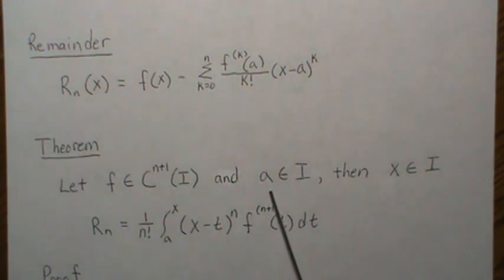We're going to let some point A be in our interval. And this applies to the interval, some interval. We're going to let A be in that interval, and X be in that interval. And then the remainder, which is this, can be written in integral form.